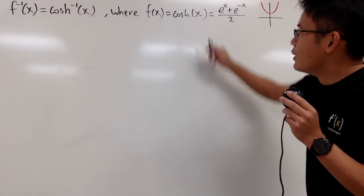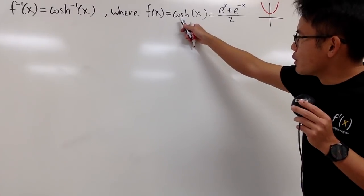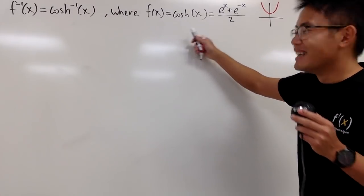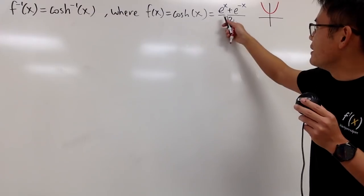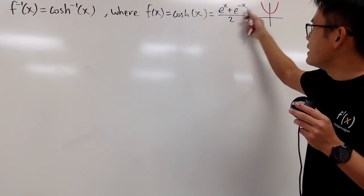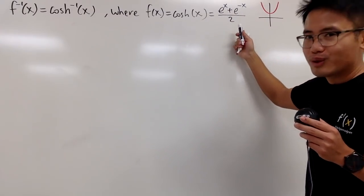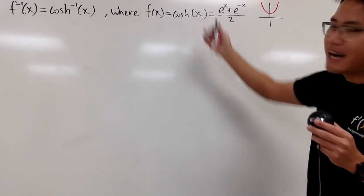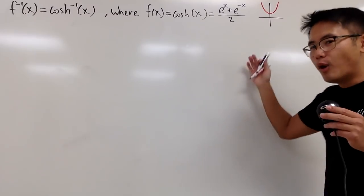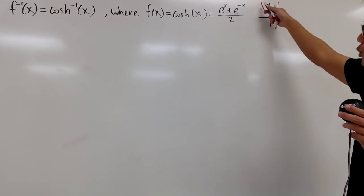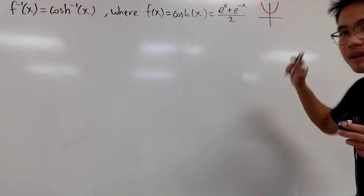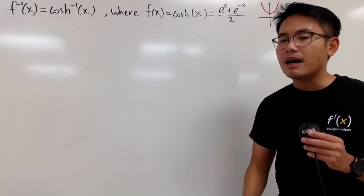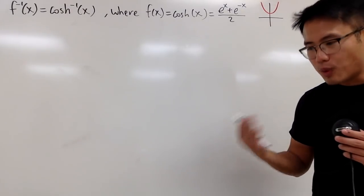As we all know, the hyperbolic cosine function — cosh of x — is equal to (e to the x plus e to the negative x) over 2. This is the exponential version of that. You can also graph this and you get a parabola-looking shape, but this right here is not a parabola.